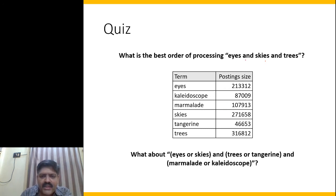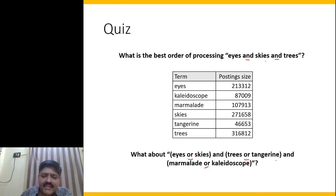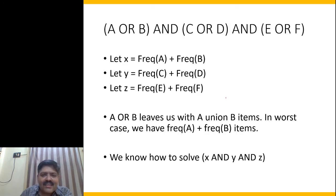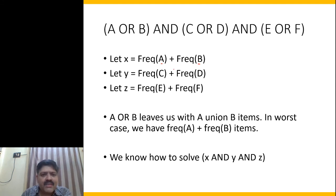Now, what happens if we have OR instead of AND? Say the query is 'eyes OR skies', 'trees OR tangerine', 'marmalade OR kaleidoscope', all connected by ANDs — of the form 'A OR B AND C OR D AND E OR F'. For an OR operation, we take list A and list B and merge all their entries. In the worst case, assuming A and B have distinct document IDs, all items from both lists would be included.